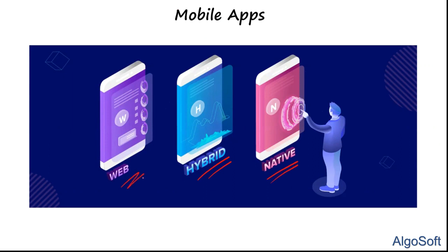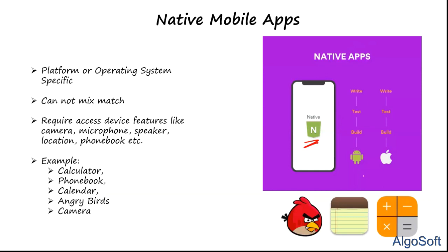The word 'native' in English means something particular to a region or territory — like native language or native food — associated with a boundary. A native app is associated with a particular device or operating system. For instance, a separate calculator is designed for Android devices and a separate one for Apple devices. They are platform-specific and cannot be mixed.